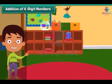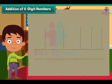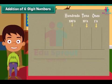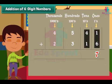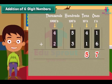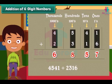Addition of four-digit numbers. The first problem that Ben picks to solve is to add 4541 and 2316. Start solving the question by writing the numbers in columns. Remember that we begin adding from ones — here the addition is 7. Now we move to add the tens: 4 plus 1 is equal to 5. Similarly, we add the numbers under hundreds and thousands, and get 8 and 6 respectively. So 4541 and 2316 when added equals 6857.